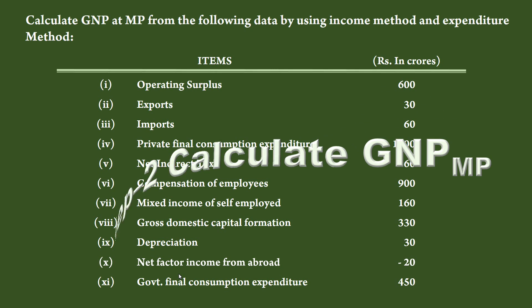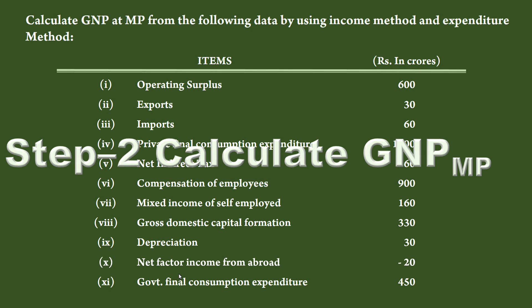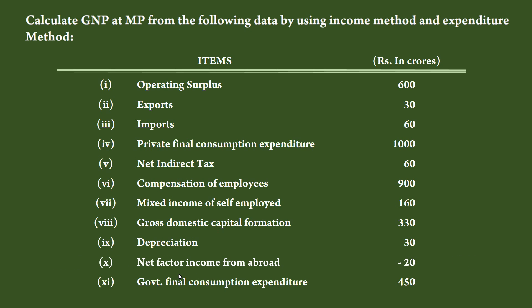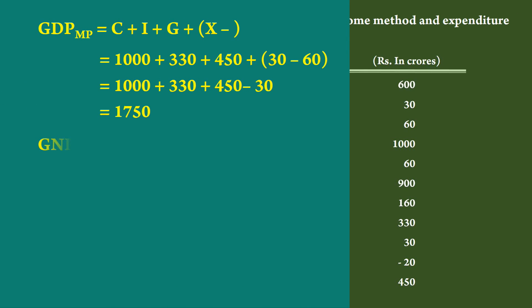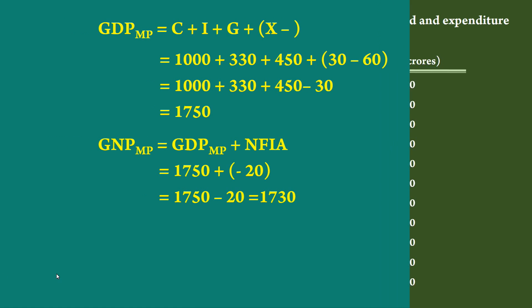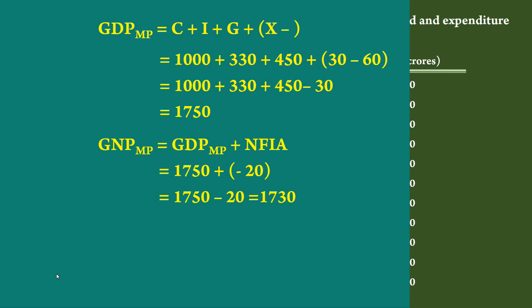Step 2: Calculate gross national product at market price. Net factor income from abroad is minus 20 crores. Add minus 20 crores with gross domestic product at market price: 1750 minus 20 equals 1730 crores. Gross national product at market price is 1730 crores.